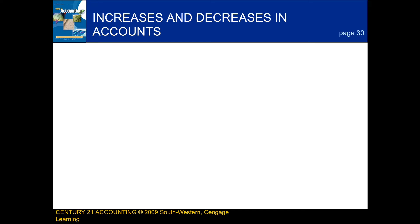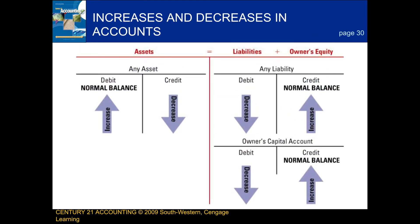The last thing we're going to be talking about in this lesson are increases and decreases in accounts. For any asset account, it will increase by a debit and decrease by a credit. For any liability account, it will increase by a credit and decrease by a debit. And for any owner's capital account, it will also increase by a credit and decrease by a debit. That is the end of the 2-1 lesson.